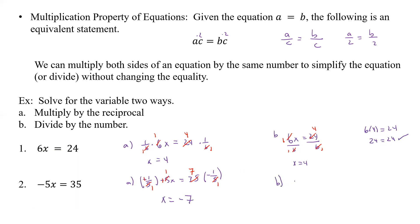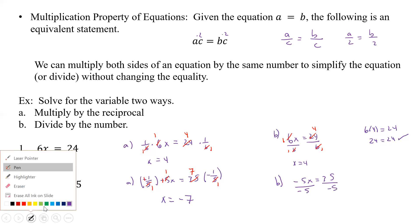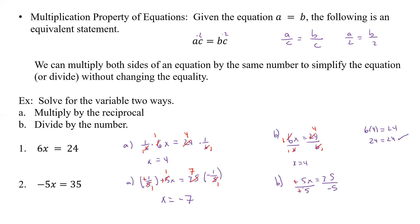The other way: we have negative 5x equals 35, and we divide by negative 5 on both sides. That goes to 1, that goes to 1, that goes to 1, that goes to 7. And 7 divided by negative 1 gives x equals negative 7. Check: does negative 7 times negative 5 equal 35? Yes, because negative times negative is positive, and 5 times 7 is 35. So it checks.